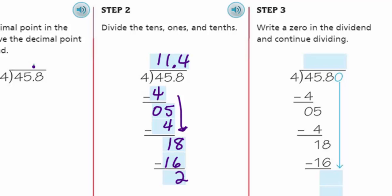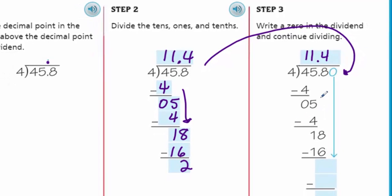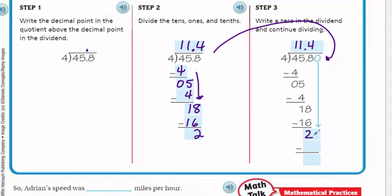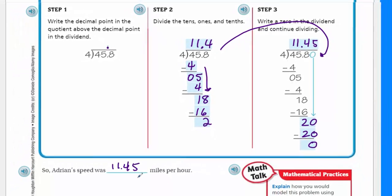So Adrian's speed was 11 and 45 hundredths miles per hour. Now let's continue. When you divide whole numbers, you can show the amount left over as a remainder or a fraction. By writing zeros in the dividend, you can also show that amount as a decimal. That's a key point.